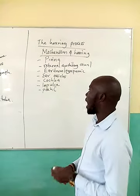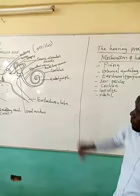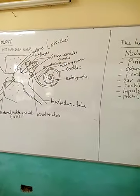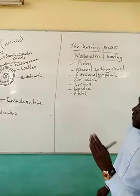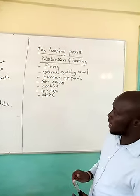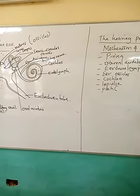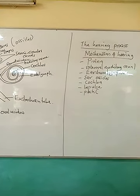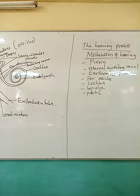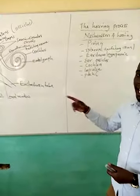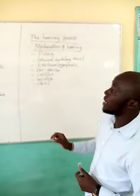From the ear ossicles, the sound waves are then transmitted via the oval window into the semi-circular canals, and from there via another window called the round window. From the round window, there is a highly coiled tube — what we call the cochlea. The cochlea is made up of three tubes and is highly coiled. That high coiling is important because it increases the surface area for the hearing process. This implies that the process of hearing takes place at the cochlea.